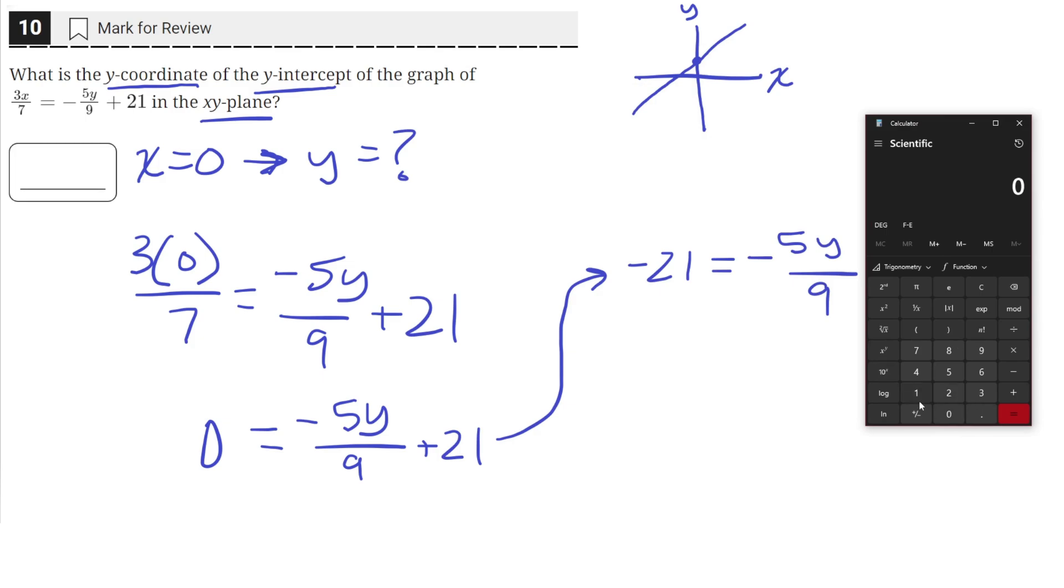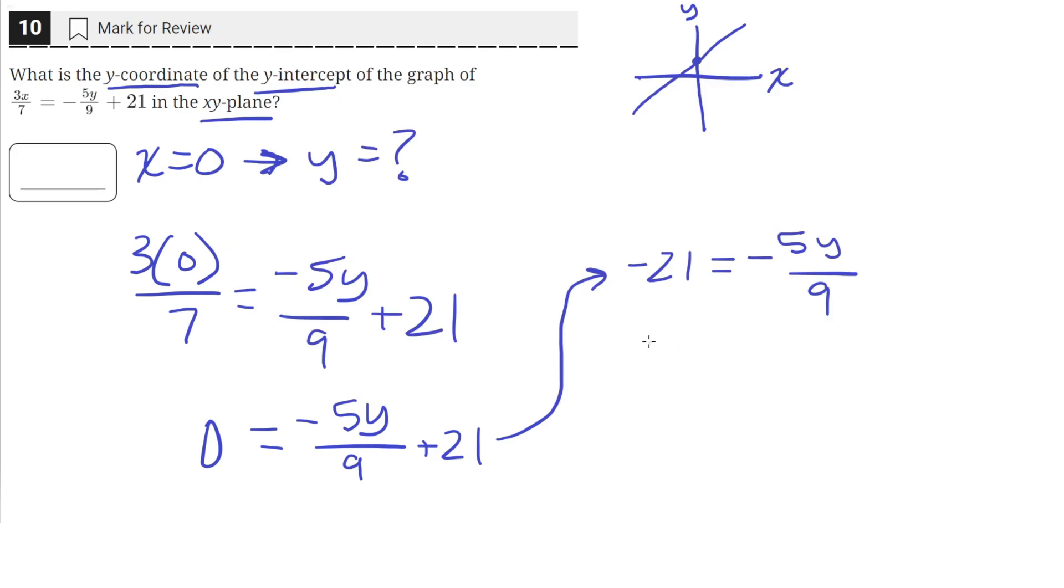So negative 21 times negative 9 is going to equal positive 189 on the left, which equals positive 5y.